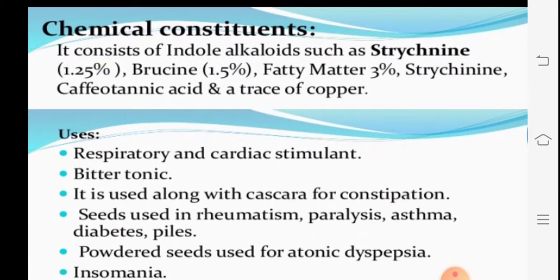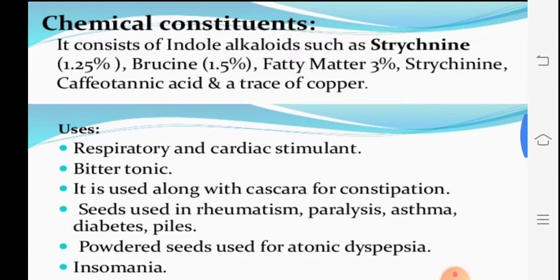The chemical composition includes the indole alkaloids: strychnine at 1.25 percent, brucine at 1.5 percent, fatty matter at 3 percent, and strychnine-caffeotannic acid. Trace copper is also detected from the seeds.